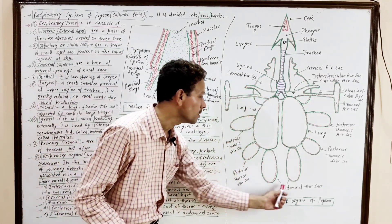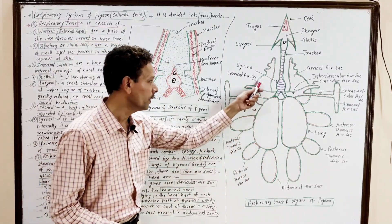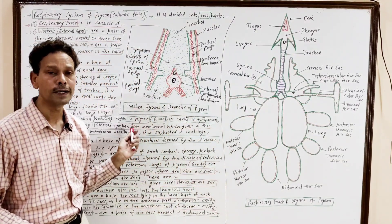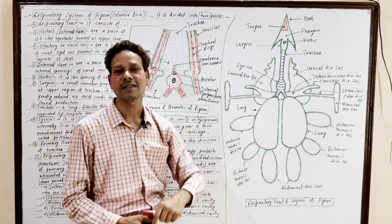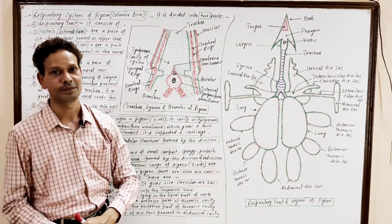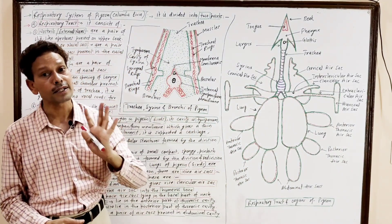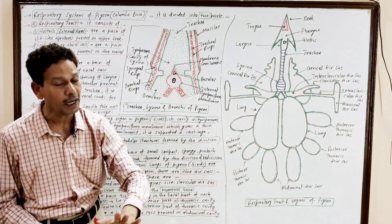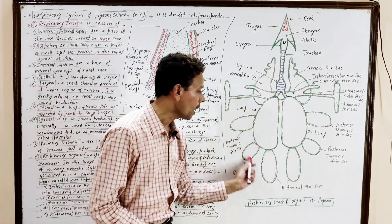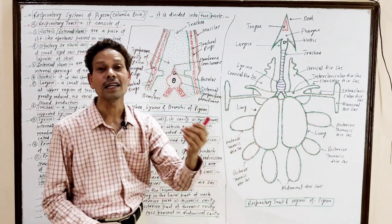In the case of pigeon, these respiratory organs — the lungs — are associated with some additional balloon-like air sacs. In the case of birds, these additional air sacs act as reservoirs of air. In the case of pigeon, there are nine additional air sacs. Out of these, four are paired and one median air sac is unpaired.